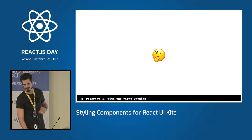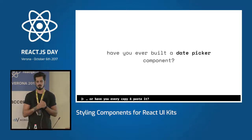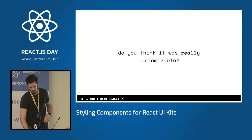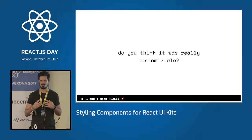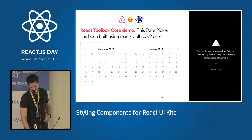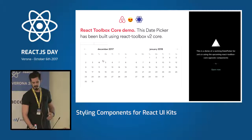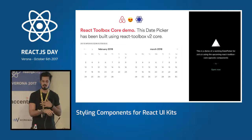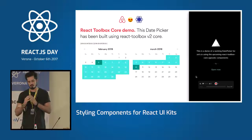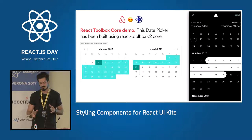Have you ever built a date picker component? Do you think the component you built was really customizable? Let me show you something. This is React Toolbox code logic for a date picker that is customized using Airbnb styles. What you see on the left side is an implementation of this date picker for the web. And what you're about to see on the right side is the same logic but using React Native components — and it's exactly the same picker, same logic. So that's it, it worked very nicely. Did I capture your attention?